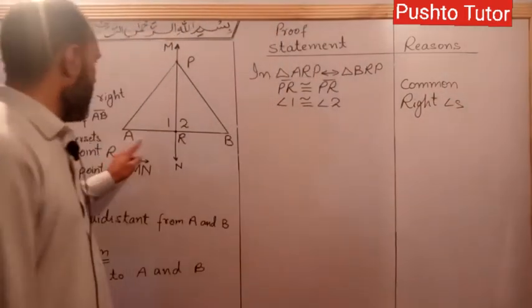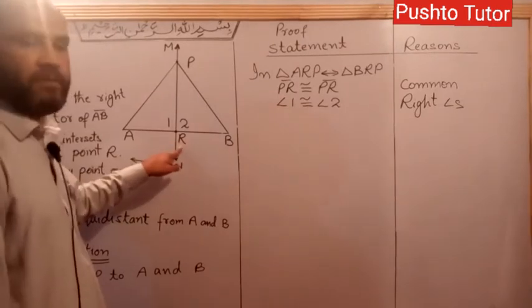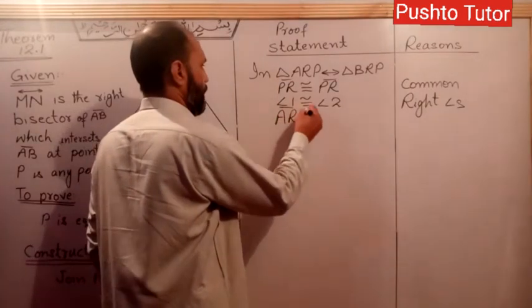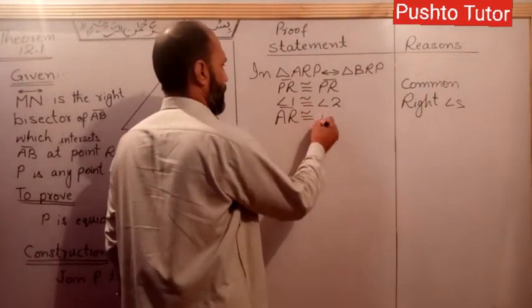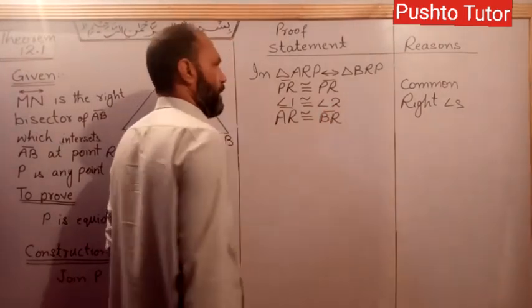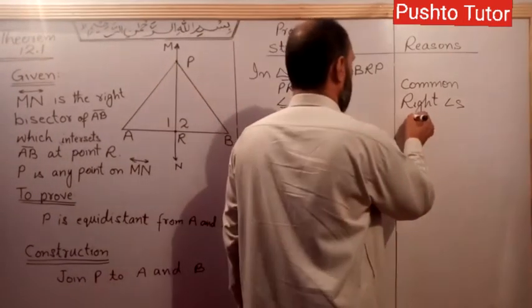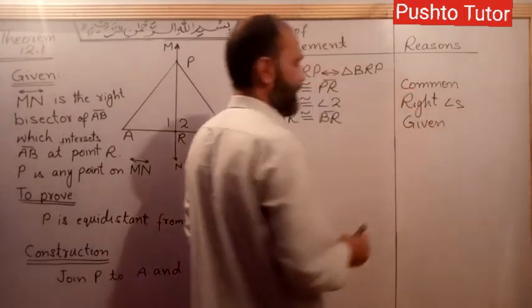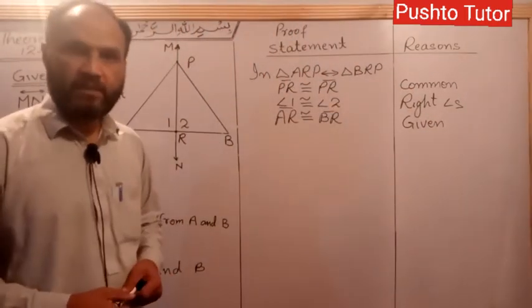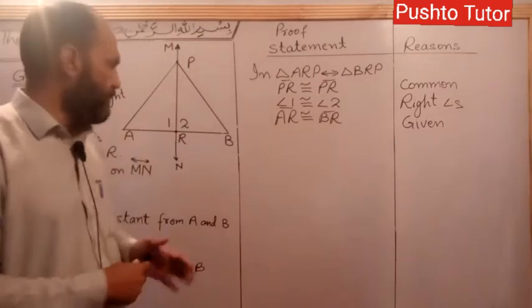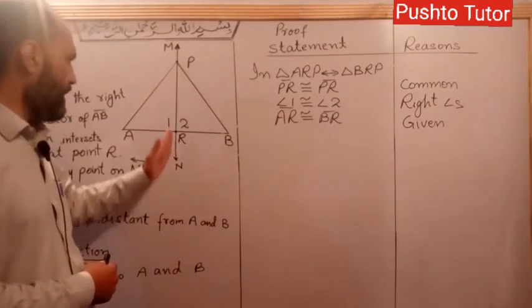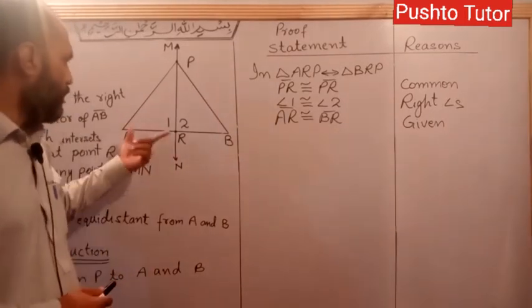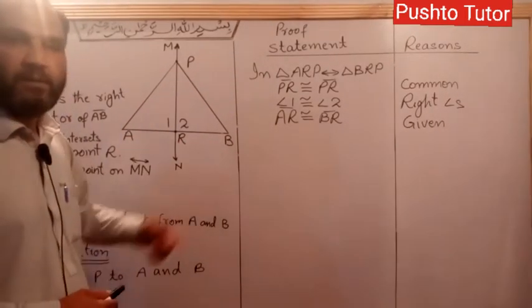AR is congruent to BR. The reason: from the given, MN is the right bisector. Bisect means it divides the segment into two equal parts. AR and BR are congruent.